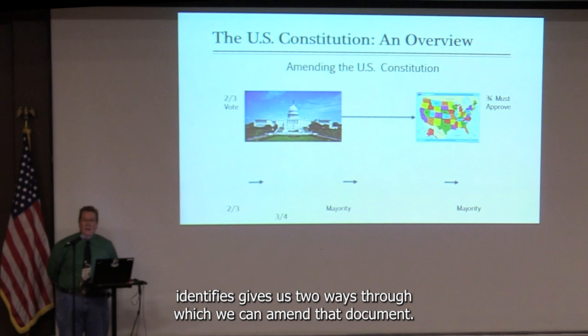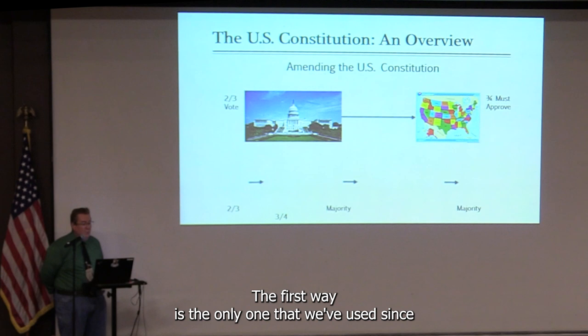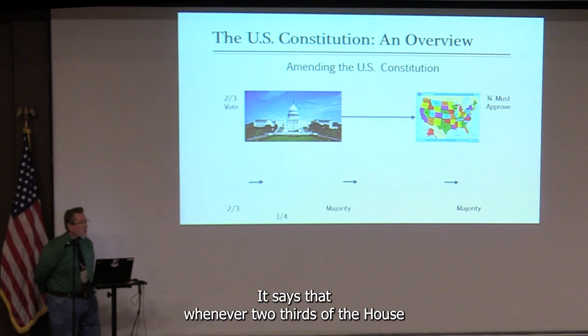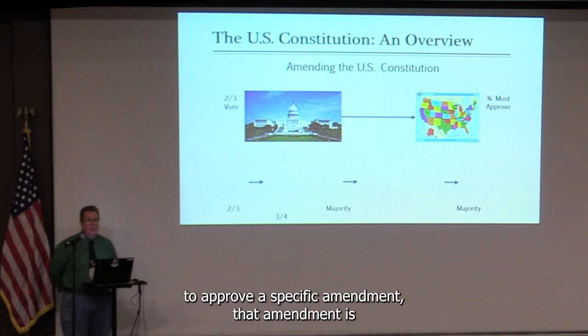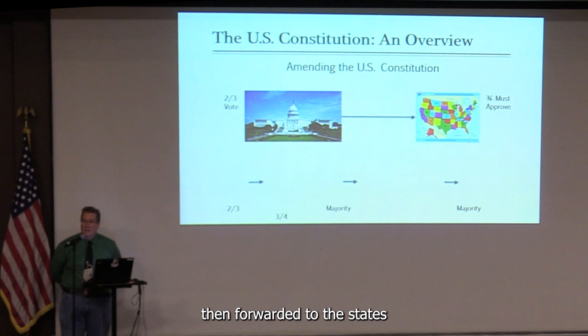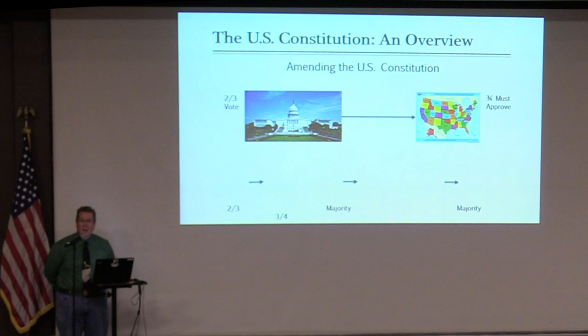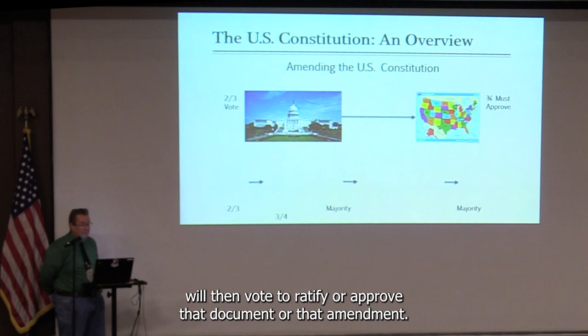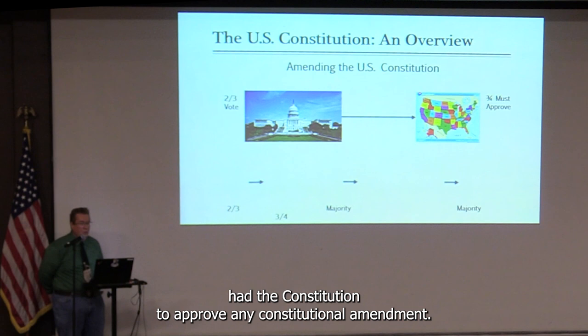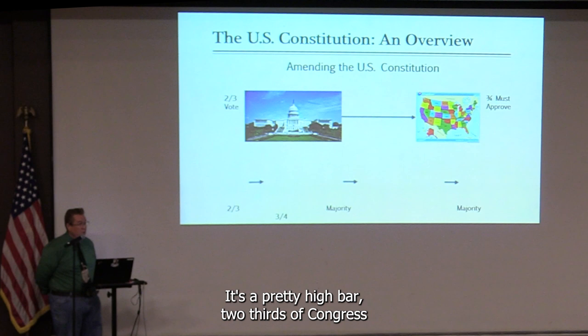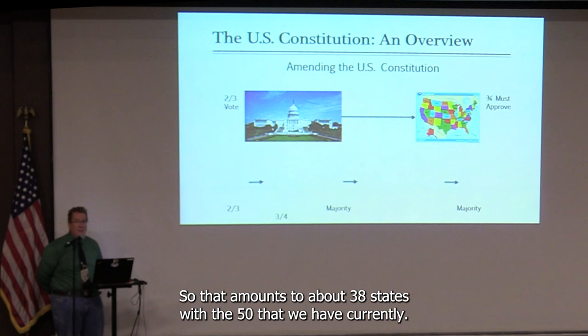The Constitution gives us two ways to amend the document. The first — the only one ever used — requires two-thirds of the House and two-thirds of the Senate to approve a specific amendment, which is then forwarded to the states. The states, either through their legislatures or through specifically called conventions, vote to ratify it. That is a pretty high bar: two-thirds of Congress and then three-quarters of the states, which amounts to about 38 states given our current 50.